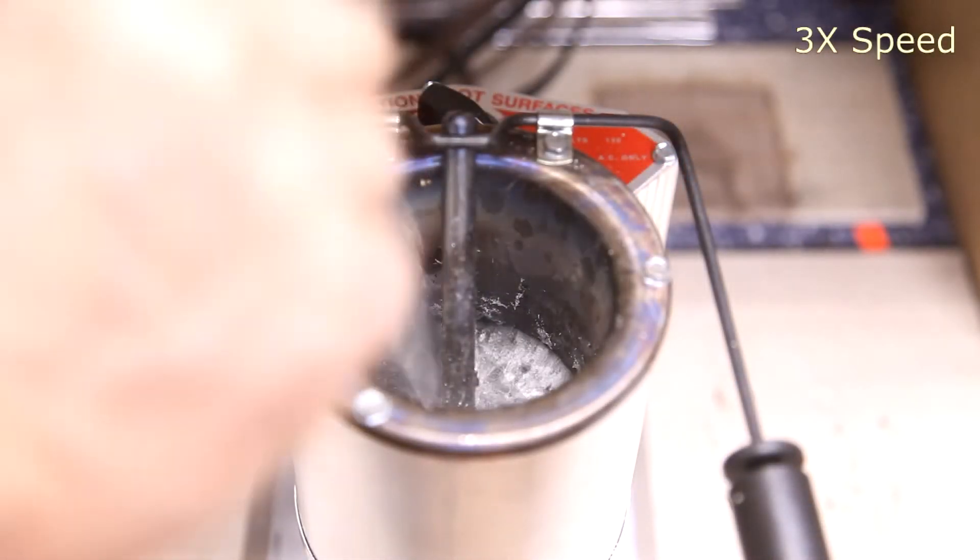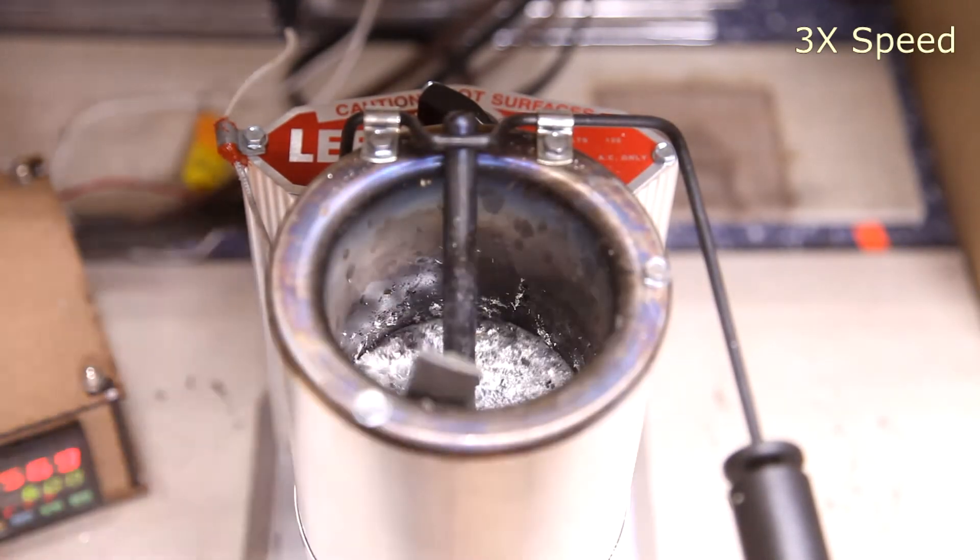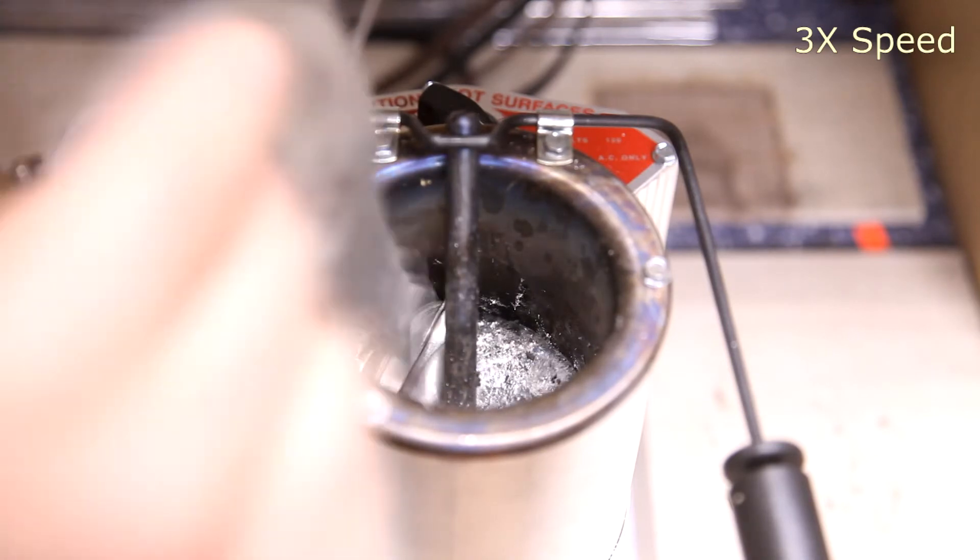I set the PID to 600 degrees Fahrenheit, and once the pot comes to temp, I start feeding it the processed pewter.